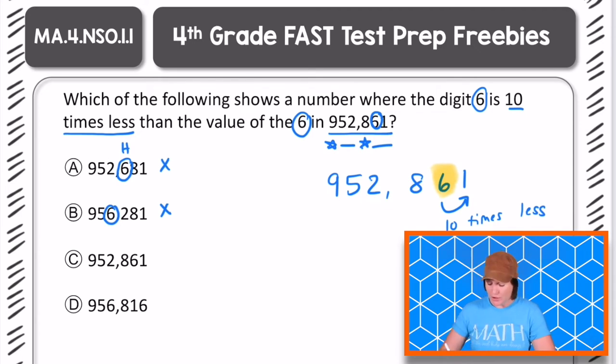C, 952,861. Well, this 6 is in the 10s place. I'll put this up here. This was in the 1,000s place for B. And for C, it's in the 10s place. But we need the digit 6 to be in the 1s place in order for it to be 10 times less. So that is not the right choice.